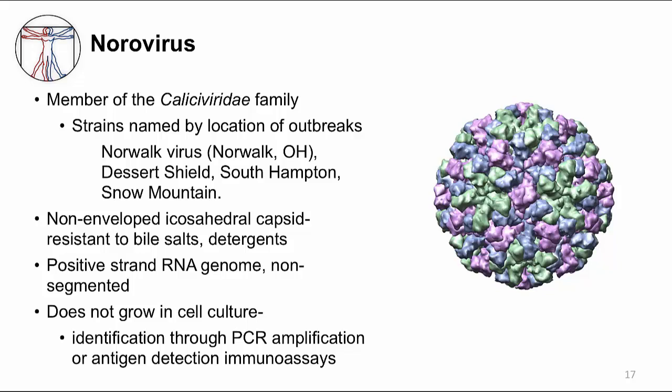Norovirus is a member of the Caliciviridae family. There are many strains of norovirus, named for the location of the outbreak — for example, Norwalk virus, from an outbreak at an elementary school in Norwalk, Ohio. We can be reinfected with different norovirus strains because they are genetically diverse, and the immune response to one strain doesn't protect against another. Norovirus causes infection in children and adults, and there is no vaccine. Like rotavirus, it is non-enveloped, but the capsid is only one layer instead of three. It has an RNA genome that is not segmented. Norovirus can't be cultured, but it can be identified by PCR, which is more sensitive and specific compared to antigen detection assays because of the different strains and antigenic variability.